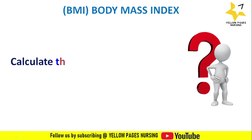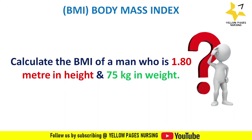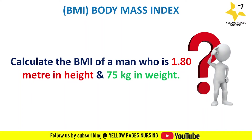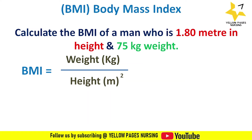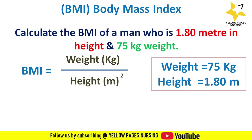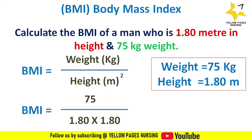Let's do an example. Calculate the body mass index of a man who is 1.80 meters in height and 75 kilograms in weight. Here the weight is in kilograms and height in meters, so we apply the formula directly. BMI equals 75 divided by 1.80 multiplied by 1.80, which gives 23.15. So the body mass index is 23.15, and as per the table, this man falls under the normal weight category.